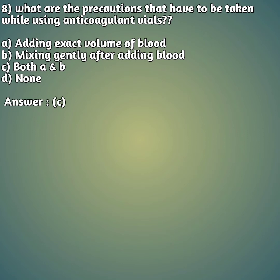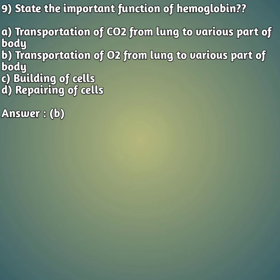Eighth question: what precautions have to be taken while using an anticoagulant? Option A: adding exact volume of blood. Option B: mixing gently after adding blood. Option C: both A and B. Option D: none. The right answer is option C — both A and B. We must add the exact volume of blood to the EDTA anticoagulant and mix it gently after adding the blood.